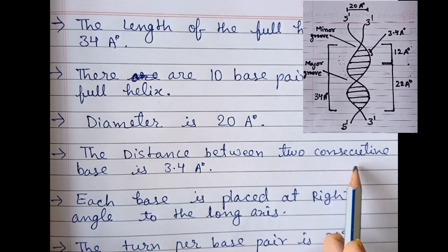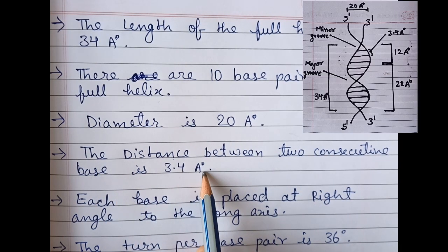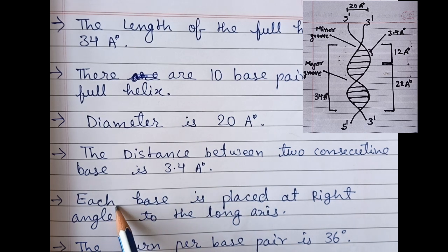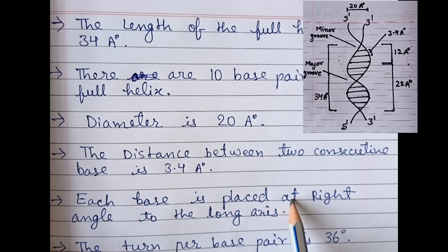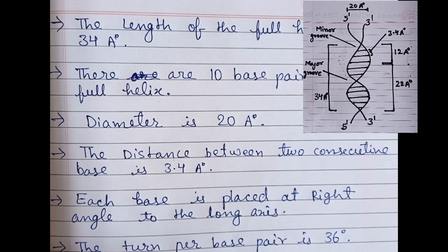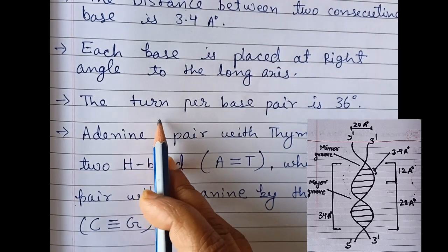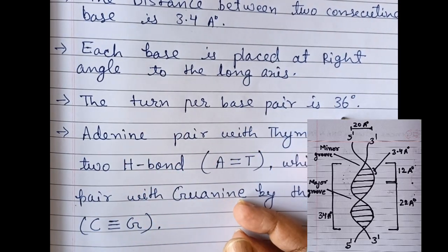The distance between two consecutive bases is 3.4 angstroms. Each base is placed at a right angle to the long axis. The turn per base pair is 36 degrees.